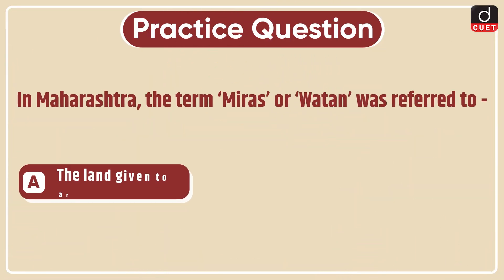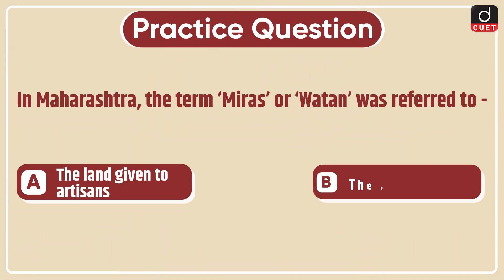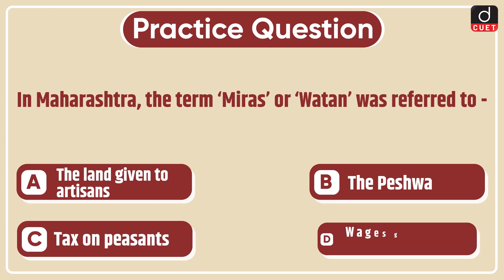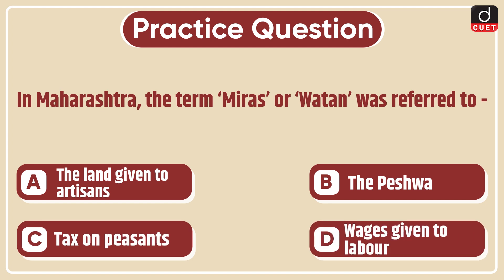Now it's time for the practice question. In Maharashtra, the term Miraz or Vatan was referred to: the land given to artisans, the Peshwa, tax on peasants, or wages given to labor. Send the answer of this question in the comment section. Stay tuned for the next episode. Thanks for watching.